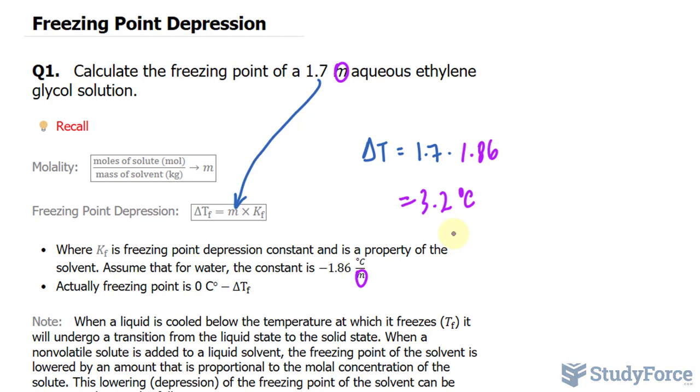Water freezes at zero degrees. So when we add ethylene glycol, we actually have to take this number and subtract it from zero degrees, which is the freezing point. By doing this, we're actually getting the freezing point when this solute is added. So the freezing point is actually negative 3.2. That's the answer to question number one.